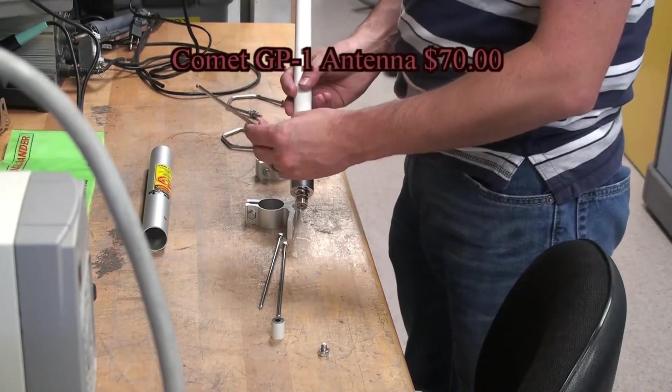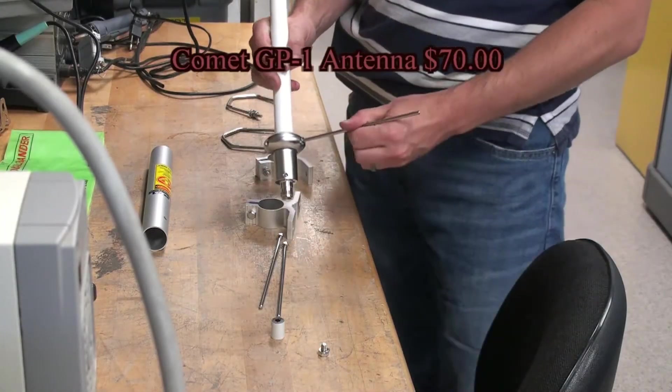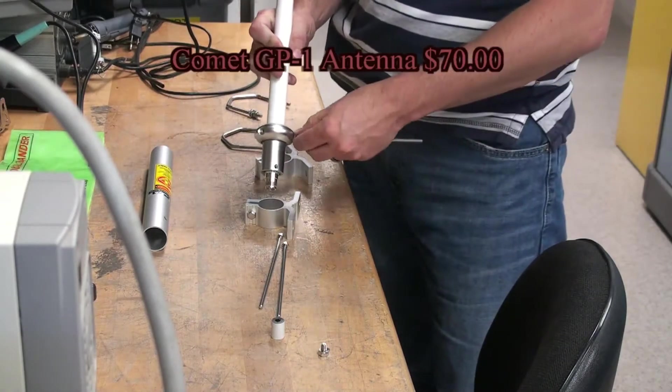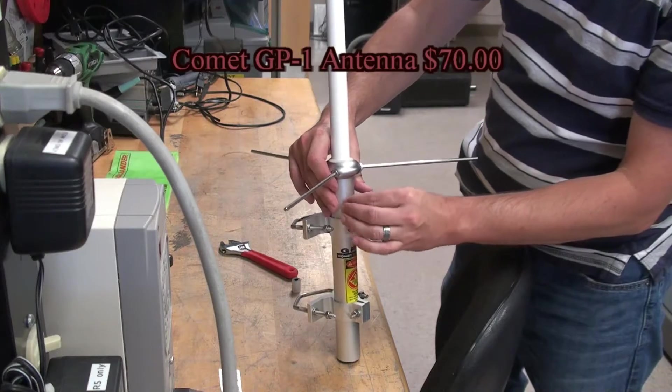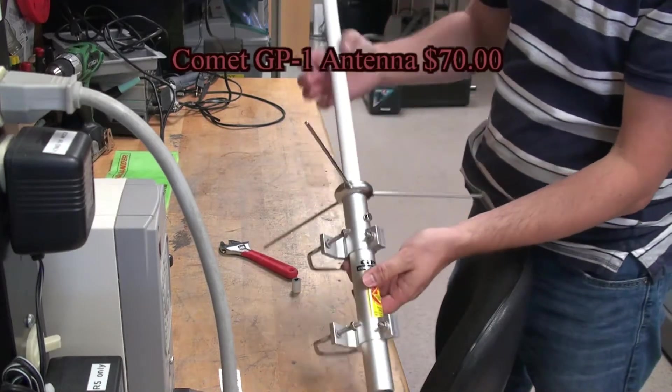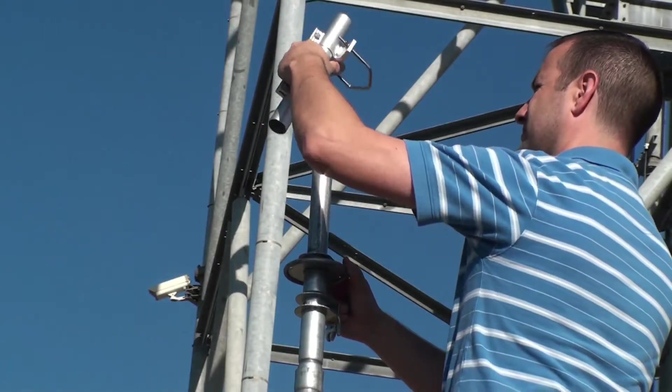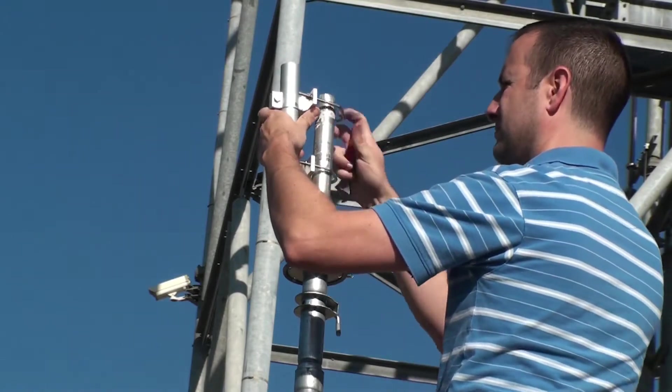For this installation we're using a Comet GP1 2 meter band antenna. Go ahead and assemble the antenna using the supplied instructions. Now we can go ahead and attach the antenna to the top of the mast.